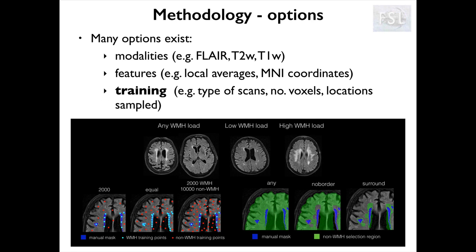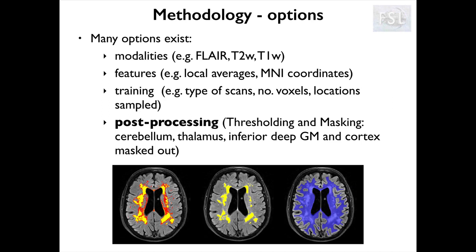All these options are available in Bianca as they could be useful for different lesion types or populations. Once we obtain the lesion probability map, we can do post-processing: apply a threshold to produce a binary map, chosen based on how conservative we want the segmentation to be. We can also constrain results by applying a mask — for example, excluding the cortex, especially when using only FLAIR images, since some cortical areas appear bright on FLAIR and might be misclassified as lesions. Other areas to mask out include the cerebellum and deep grey matter structures, as Bianca is not currently optimized for those regions.